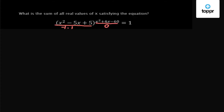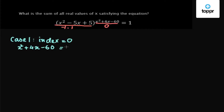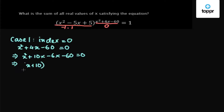Case 1: when the index equals 0, we have x² + 4x - 60 = 0. Factorizing: x² + 10x - 6x - 60 = 0, which gives (x + 10)(x - 6) = 0. So the values of x are x = -10 and x = 6.